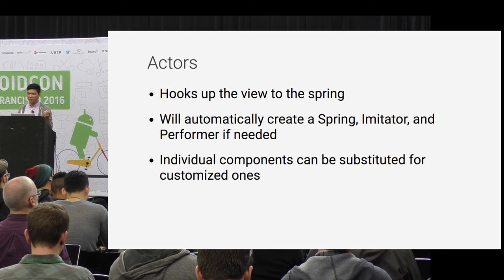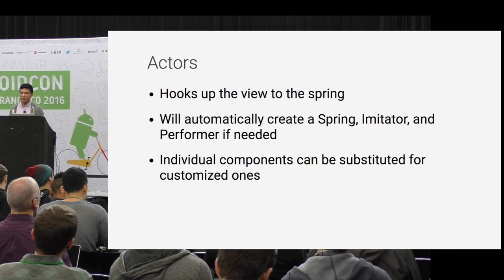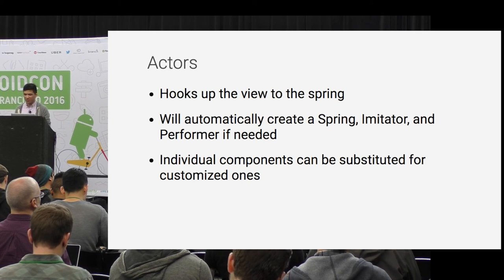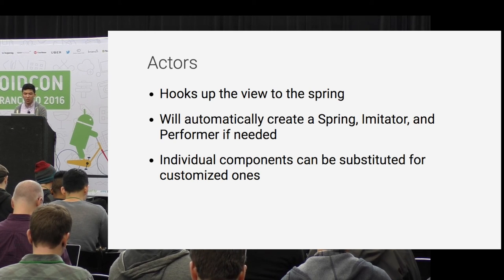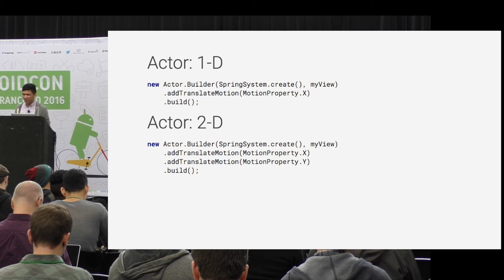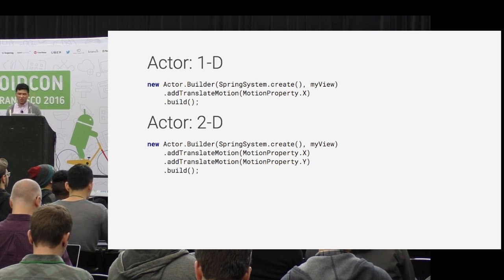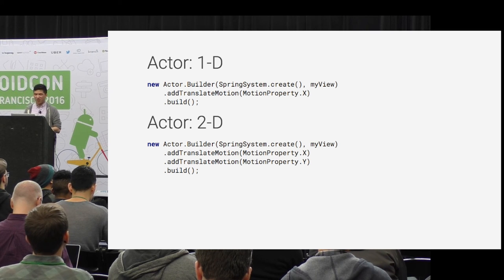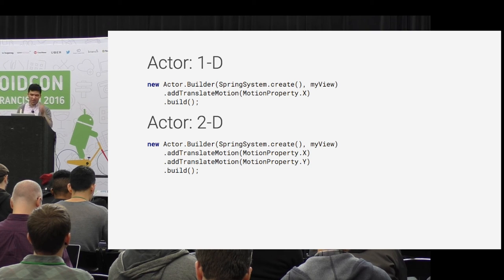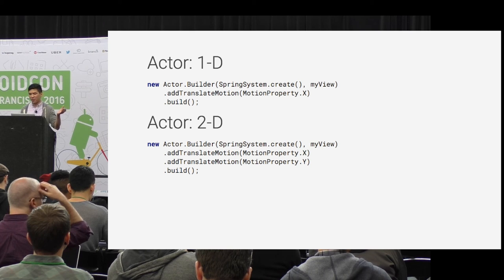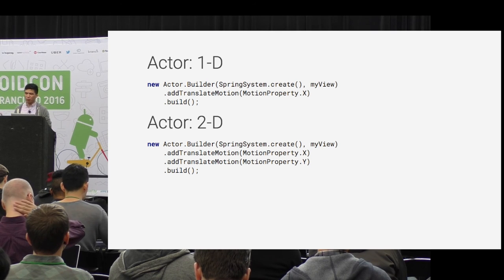Actors hook up those interactions and callbacks together. If you don't specify an imitator or performer, you can specify enough information for it to guess what you're trying to do. The chat head animation is a lot easier in Backboard. You call addTranslateMotion with motion property X and it says you want motion in the X direction. You gave me a view and a spring system so I can create a spring, and motion property X also says translationX is the desired view property to animate.